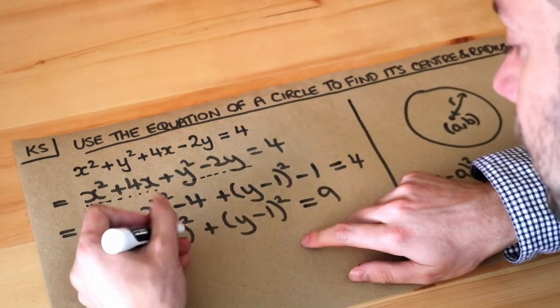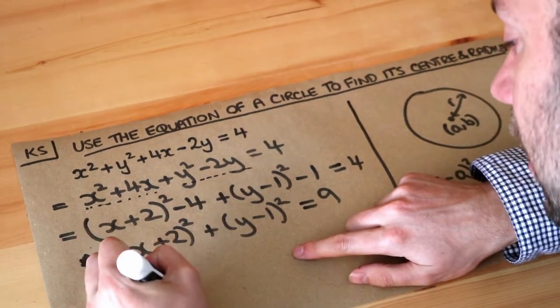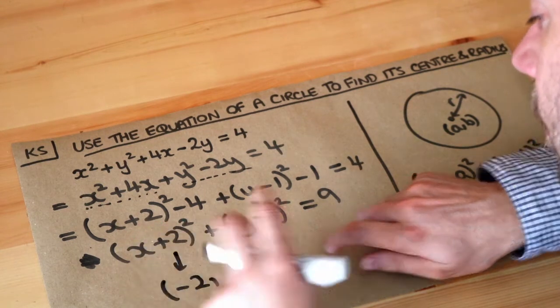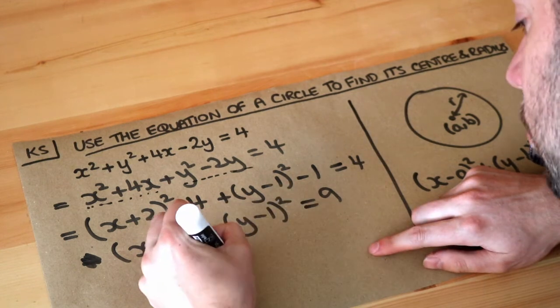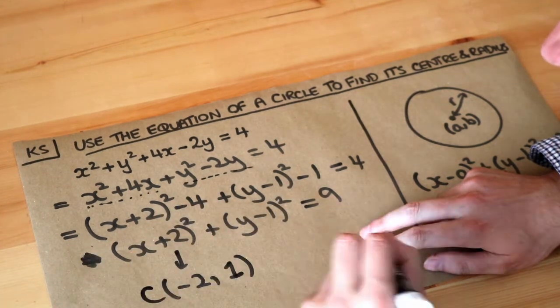Now do you remember to find the center, well we just negate that. So the center, the x value of the center is minus 2, and we negate that so the minus 1 becomes plus 1. So that is the center of the circle.